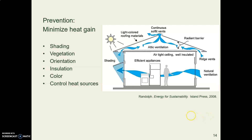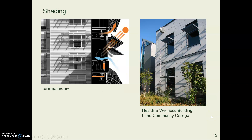We prevent heat buildup with several strategies: shade, including vegetation to provide evapotranspiration; thinking about what orientation your building faces relative to the sun; insulating your building; thinking about color — light color reflects heat, dark color absorbs it; and controlling heat sources inside. Instead of an inefficient appliance that generates a lot of heat, get an energy-efficient appliance that doesn't generate as much heat.